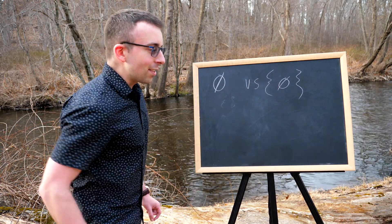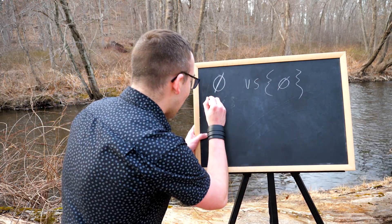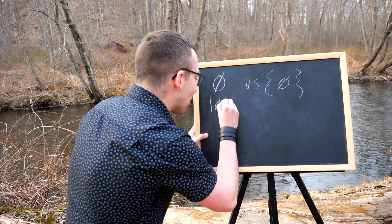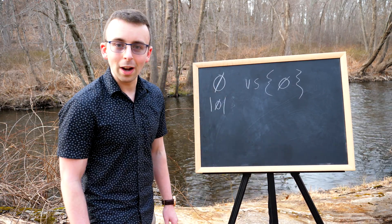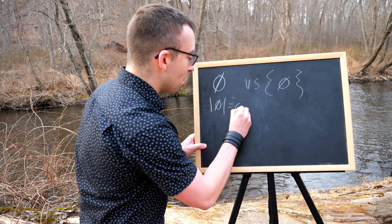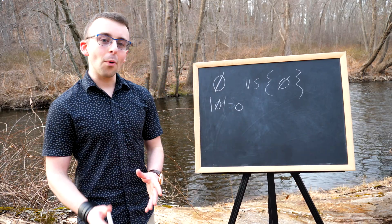The empty set versus the set containing the empty set, the difference is actually quite stark. What's the cardinality of the empty set? Well, it's empty, so that would be zero. It has no elements.